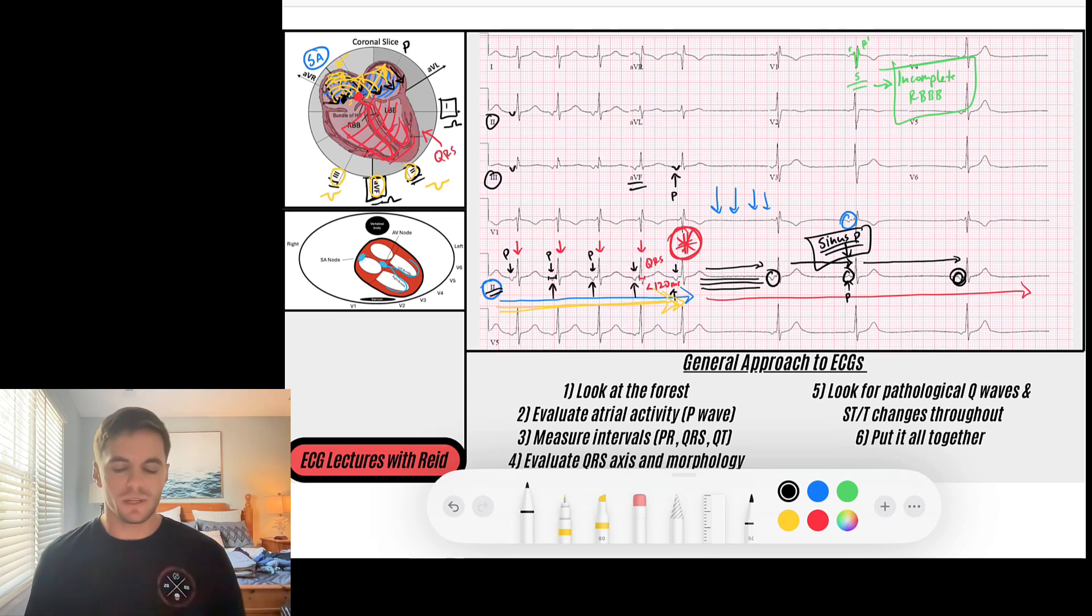Sinus P waves, as we defined in blue earlier on the video, are going to be upright in leads one and AVF as they head down to the left, because that sinus node sits high in the right atria. On the other hand, an ectopic atrial rhythm that is driven by a focus within the atria and an ectopic origin is going to create a wave of depolarization that is different, and you need to look at that in all the leads.